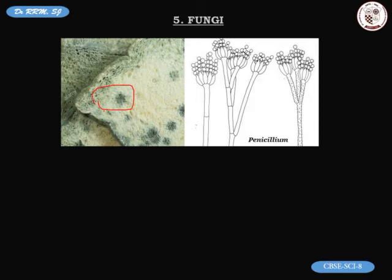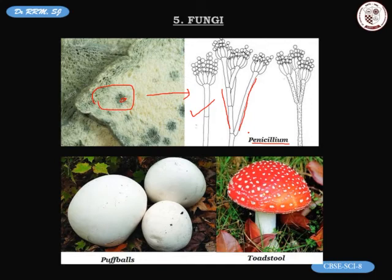Penicillium also grows on bread, forming a greenish color. Under the microscope a small portion shows branching structures with round spores at the ends, which help in reproduction. This is our penicillium.